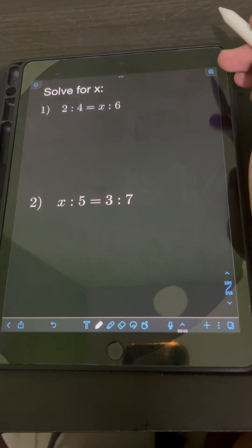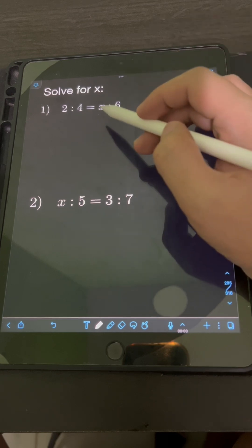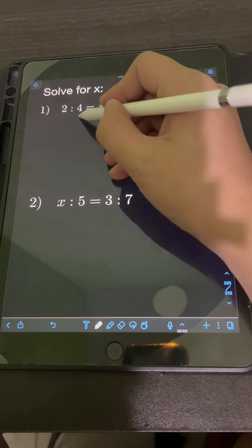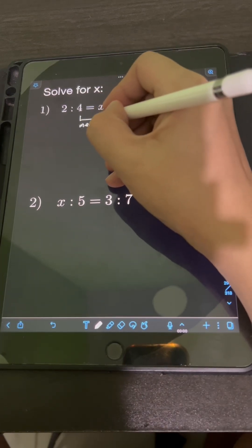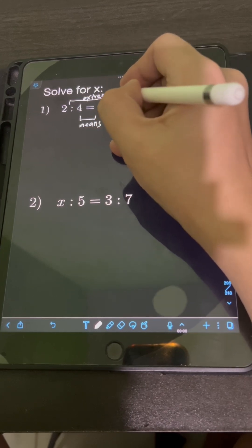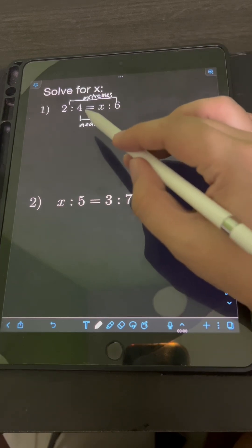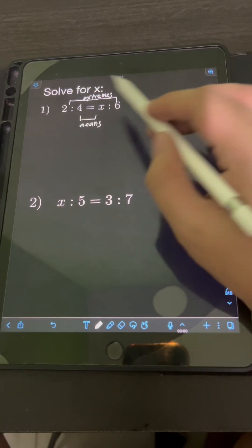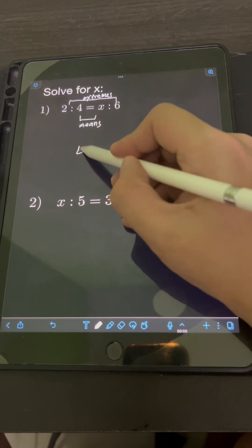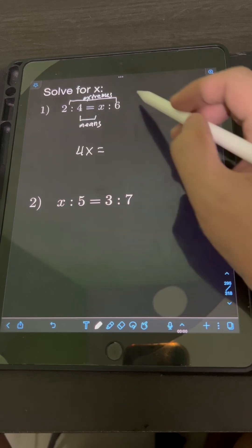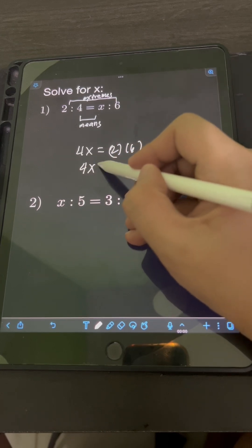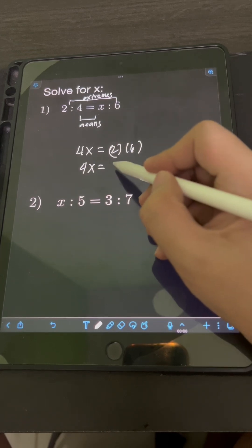Okay, so we have ratio and proportion. So to solve for x, we simply apply the concept in ratio and proportion that the product of the means should be equal to the product of extremes. So the means here are 4 and x while the extremes are 2 and 6. So equating the product of the means and extremes, we have 4 times x equal to the product of the extremes 2 times 6. So we have 4x equal to 2 times 6, that will be 12.